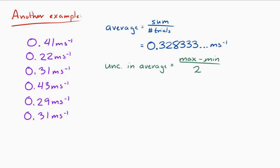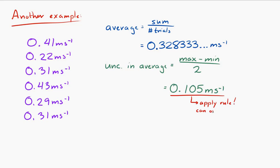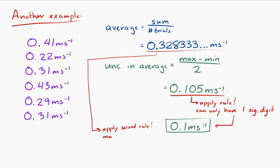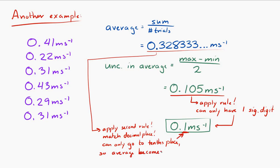However, we have to apply the rules. Uncertainty can only have one significant digit, so now the uncertainty is 0.1 meters per second. The other rule is the last decimal place of the average must be the same as the decimal place of the uncertainty. Our uncertainty is in the tenths place, so the last decimal place of the average must also be the tenths place. So our average is 0.3 meters per second, plus or minus 0.1 meters per second.